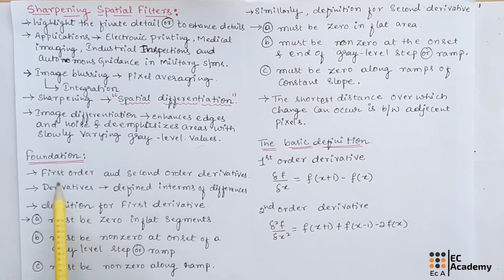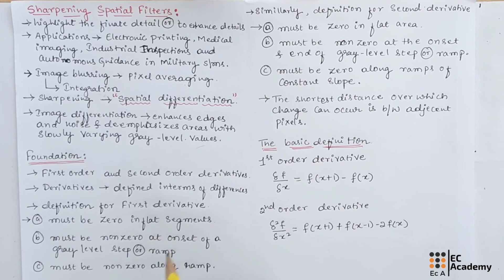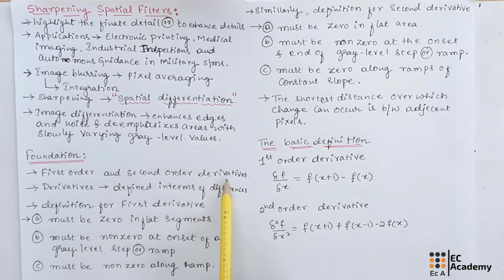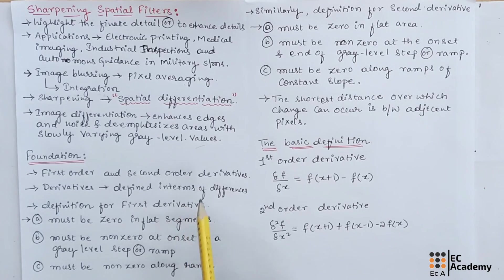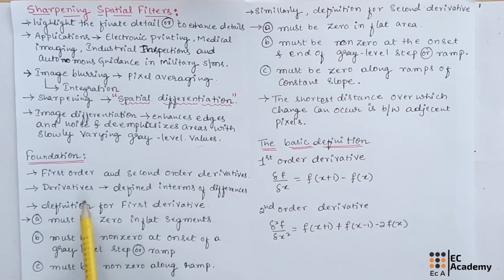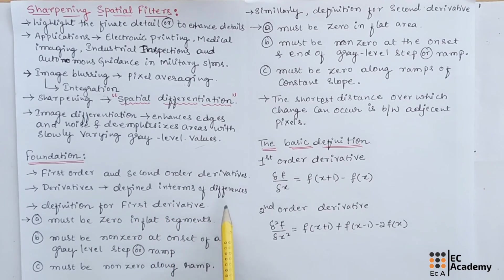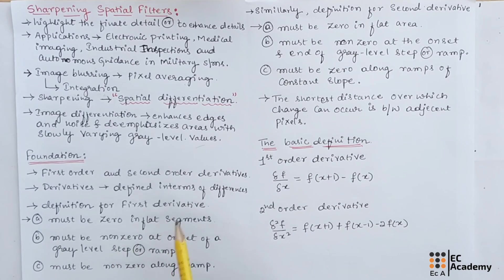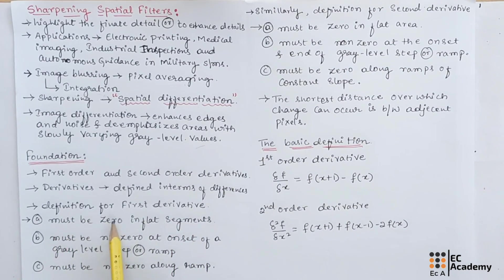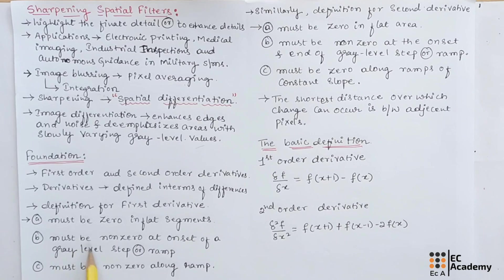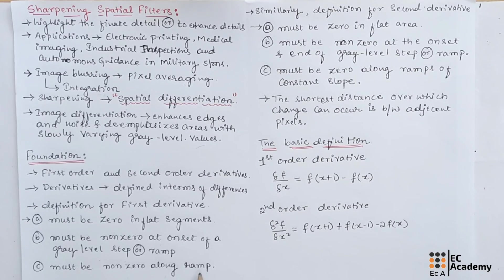Now let us see the basic foundation of image sharpening. We can consider details of sharpening filters that are based on first-order and second-order derivatives. Derivatives of a digital function are defined in terms of differences. The definition used for first-order derivative must be zero in flat segments, must be non-zero at the onset of a gray level step or ramp, and must be non-zero along the ramp.